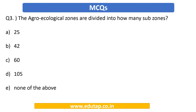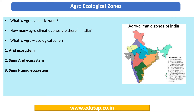Let us review what we covered in previous lectures. We covered agroclimatic zones and agroecological zones, including how many agroclimatic zones there are and their specifications. In Part 1, we learned what agroecological zones are, which body was responsible for carving them out, and the need for doing so. We also covered three of the six broad ecosystems: arid, semi-arid, and semi-humid.